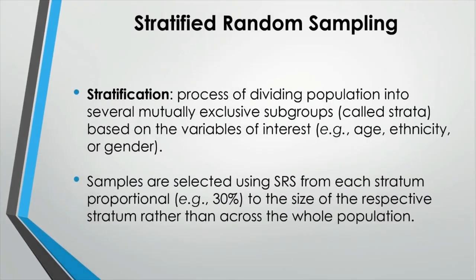Next is stratified random sampling. In this scheme, you first divide the population of interest into several mutually exclusive subgroups called strata, based on variables of interest such as age or gender, which are typically unmodifiable risk factors. For example, if you want to know the differences in refractive errors of a population between different age groups — less than 20 years old, 20 to 40, and over 40 — then you stratify the population into the corresponding age groups, then do simple random sampling so that a relatively equal proportion of each age group is selected.